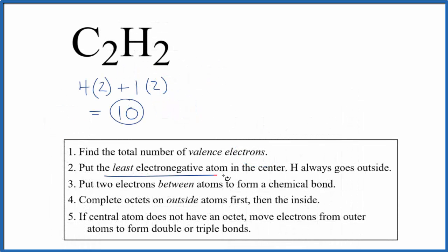Normally, we put the least electronegative atom in the center, but hydrogens always go on the outside. So we're going to put two carbons with hydrogens on the outside, like this.